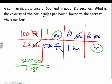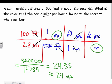Multiplying the tops: 100 times 1 times 60 times 60 gives 360,000. Multiplying the bottoms: 2.8 times 5,280 gives 14,784. Dividing those gives approximately 24.4, so to the nearest whole number that's about 24 miles per hour. So if you're traveling 100 feet every 2.8 seconds, you're going approximately 24 miles per hour. Use the big T chart to keep track of everything.